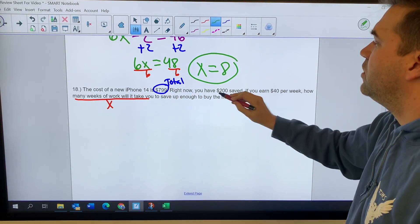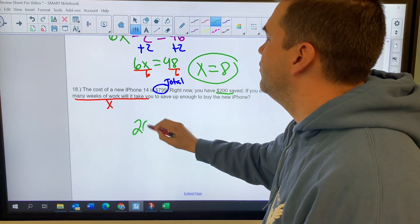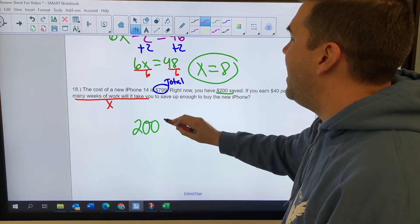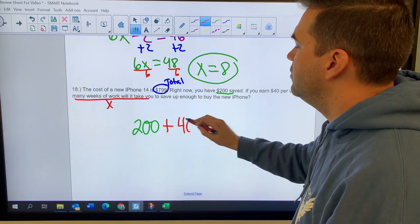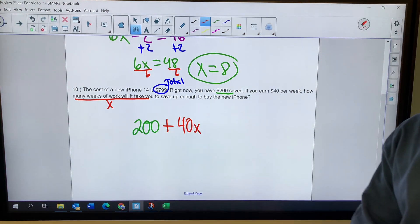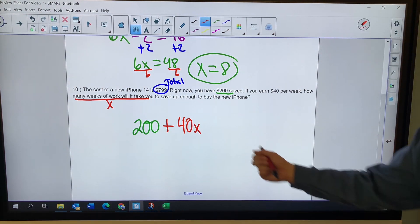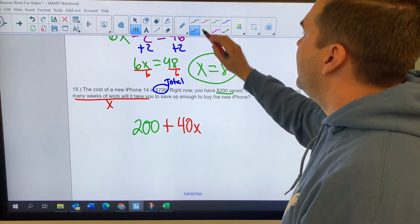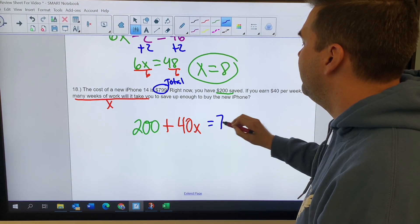I'm going to start with $200. I'm going to add to that $200 $40 per week. That's $40 multiplied by the number of weeks, which is x. That's going to equal $799.